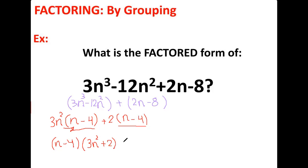Both groups share the same factor (n - 4), so the GCF is (n - 4). We take (n - 4) outside and find the remainder: 3n² from the first group and 2 from the second group. So the factored form is (n - 4)(3n² + 2).